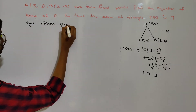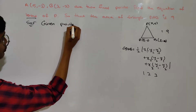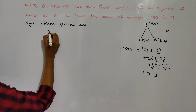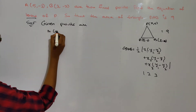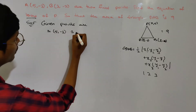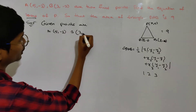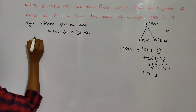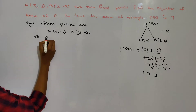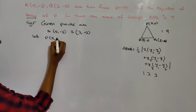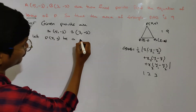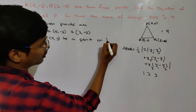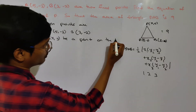Given points are: A of (5, -3) and B of (3, -2). Let P of (x, y) be a point on the locus.